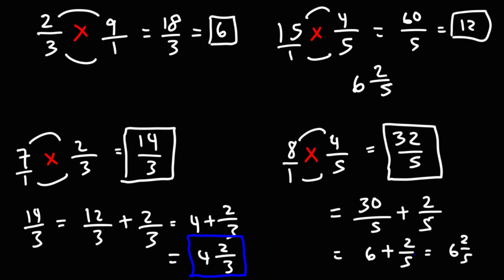So that's another way in which you can convert improper fractions to mixed numbers. But now you know how to multiply whole numbers and fractions together.